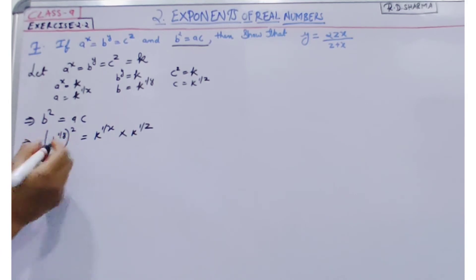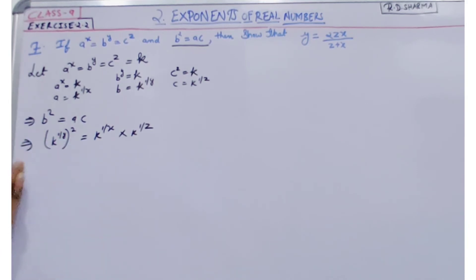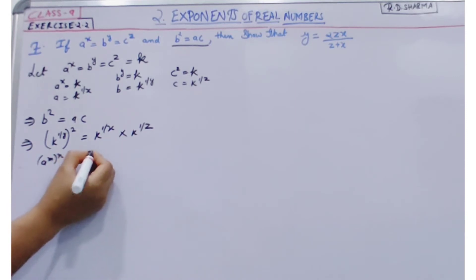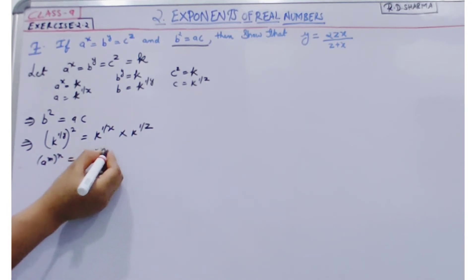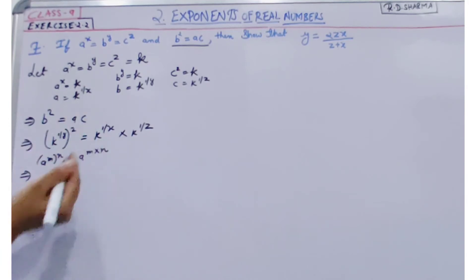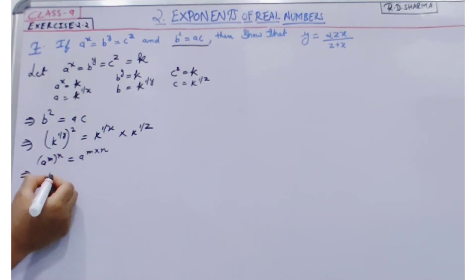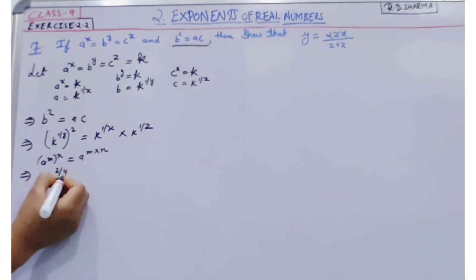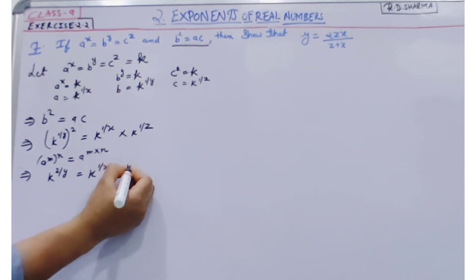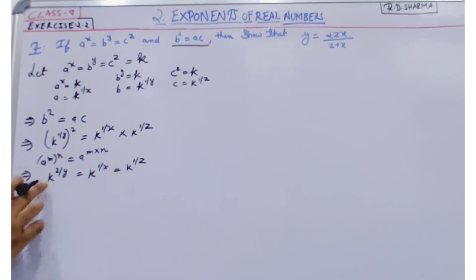Now according to our exponent law, e to the power m to the power n is equal to e to the power m into n. So our next step is: 1 by y is multiplied by 2, giving k to the power 2 by y is equal to k to the power 1 by x, multiplied by k to the power 1 by z.